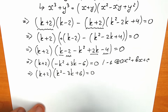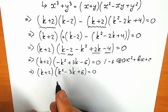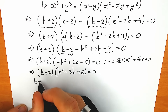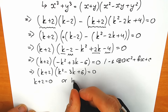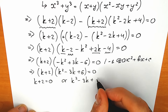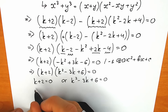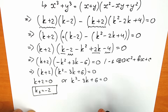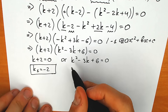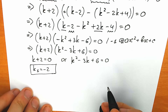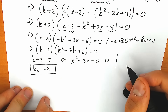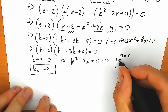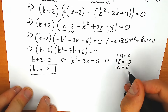Now we can easily solve it. First, k plus 2 equals zero, giving k₁ equals minus 2 — we'll check that in a moment. For the second part, k-squared minus 3k plus 6 equals zero. This is a quadratic equation and I'm going to solve it using the discriminant method with coefficients: a equals 1, b equals minus 3, and c equals 6.